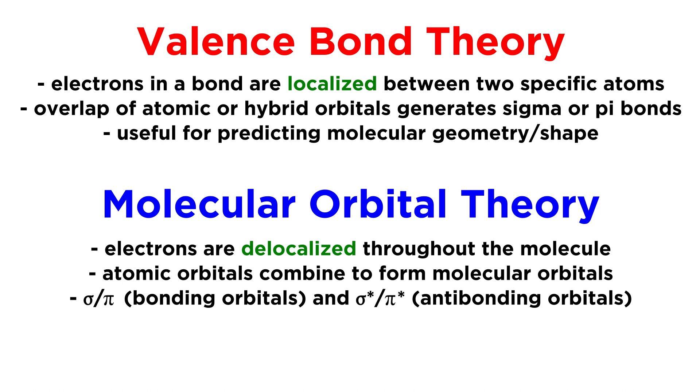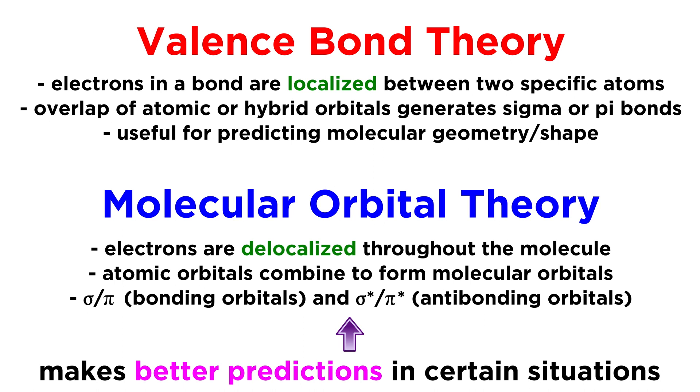These can be sigma and pi bonding orbitals, or sigma star and pi star antibonding orbitals. This theory ends up being better equipped to predict the arrangement of electrons in a molecule in certain situations.